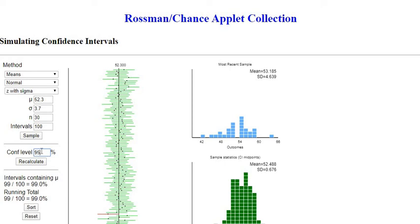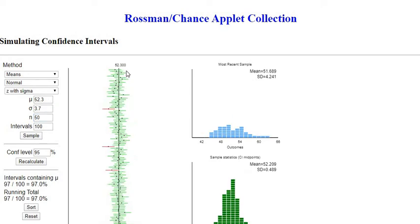The other thing that will change it is our sample size. If I just go back to our default 95% and recalculate, if I change my sample size—30 is kind of like the starting point—if I change it to 50 and sample from here, notice that I still got 97% of them contained it, but my interval actually got a lot smaller.